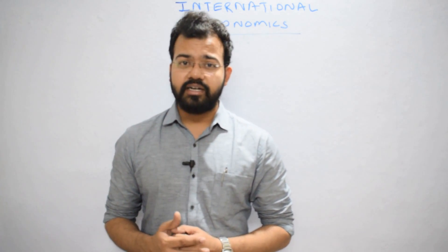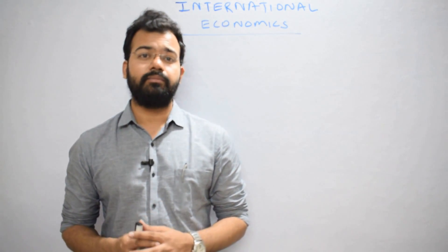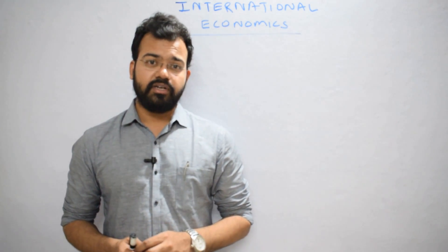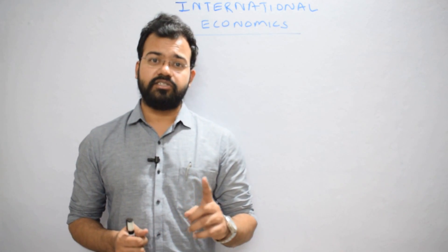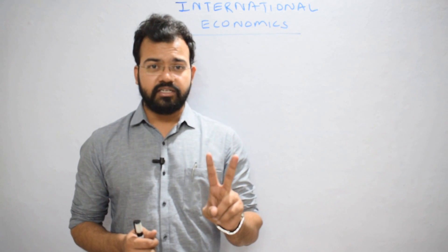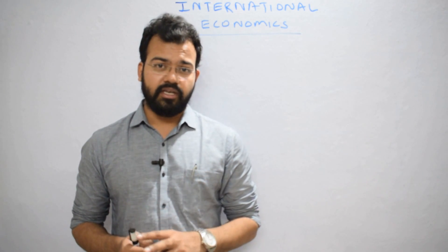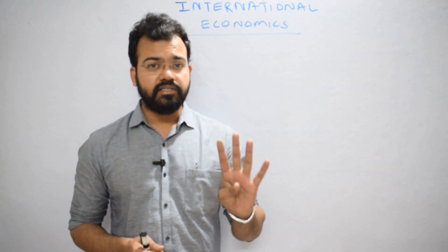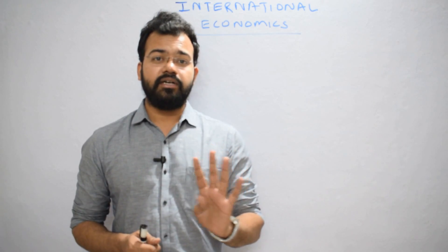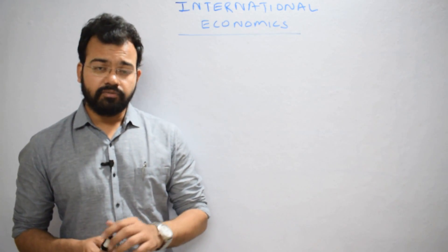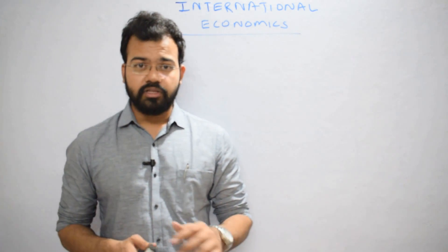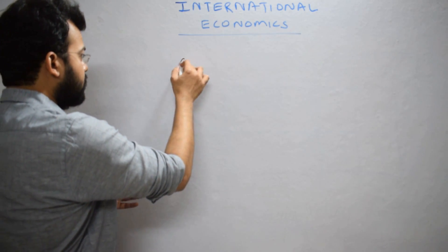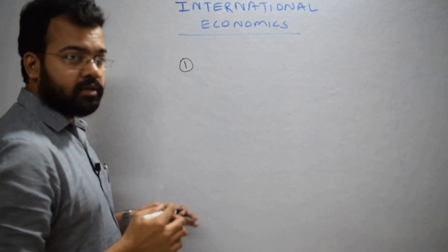In international trade, the subject discipline deals with four important things: first, international trade theory; second, international trade policy; third, balance of payment; and fourth, adjustment in the balance of payment. These are the most important points in international economics.